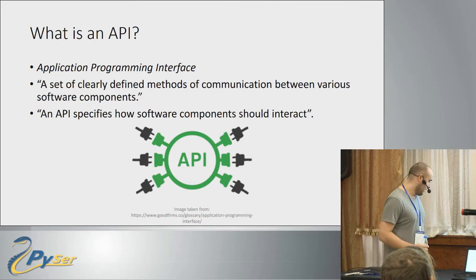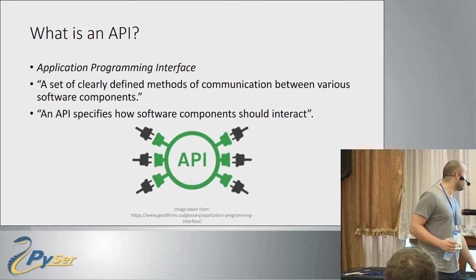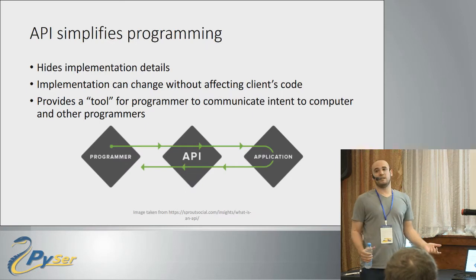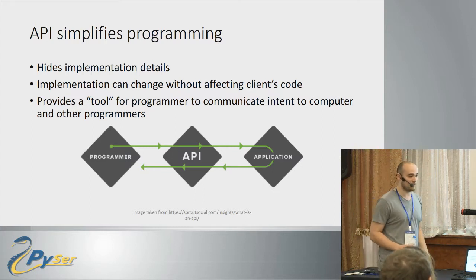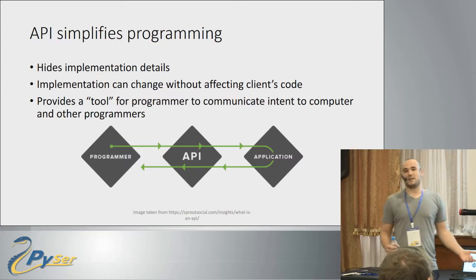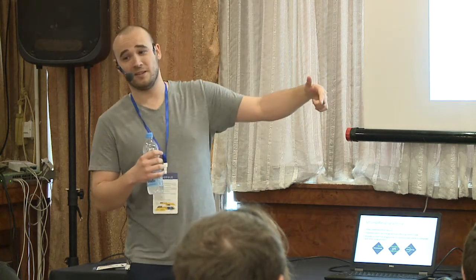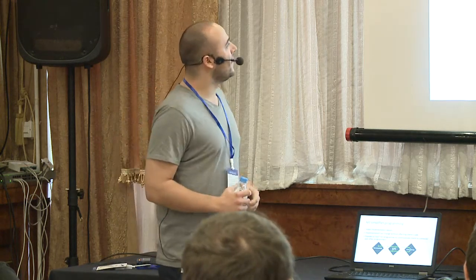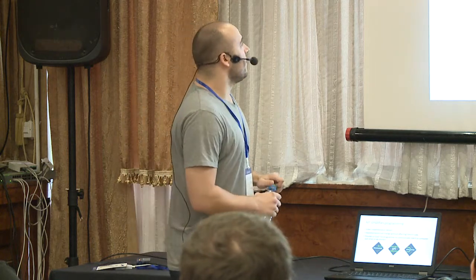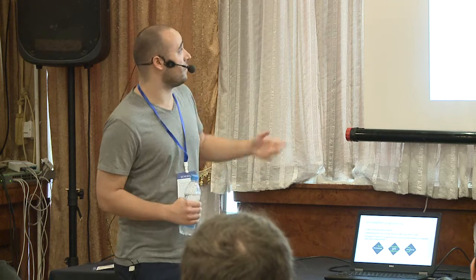So why do we actually need an API? Well, an API simplifies programming — it hides the implementation details. We've heard this so many times, but do we actually know what that means? They say that when you use an API you cannot see the implementation of the software that provides it. In Python that's not entirely true — you can see everything. But what I would say is that you don't care about the actual implementation.